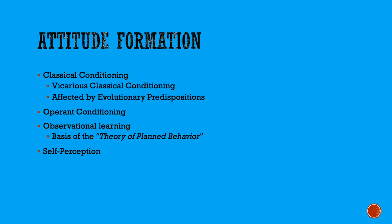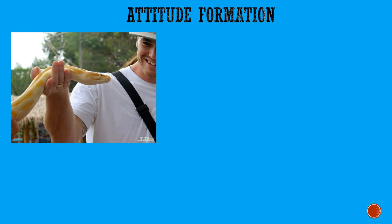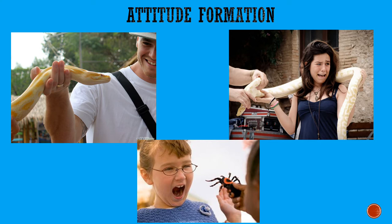What is vicarious classical conditioning? A lot of people have a very strong fear or phobia about snakes and spiders and various other creepy crawly things, and yet most people have not had any really direct experience with these kinds of animals that would make us so afraid of them. So where do these attitudes come from? A lot of these attitudes that we seem to have no explanation for have been formed through the process of vicarious classical conditioning.